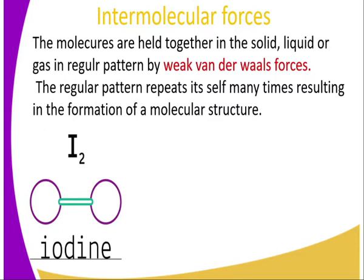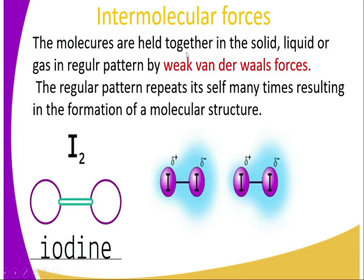For instance, iodine. The bond between two atoms of iodine is a covalent bond. Iodine has a diatomic molecule. But now, the molecules themselves — this molecule and this molecule — are attracted to one another, and this results in a bond which we refer to as the weak van der Waals forces.